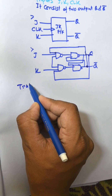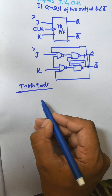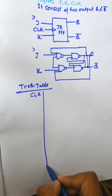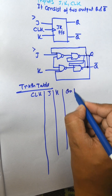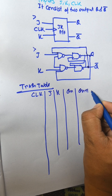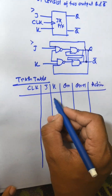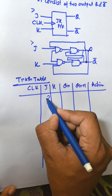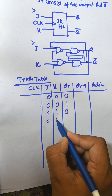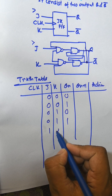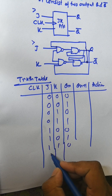Now the truth table. The truth table consists of CLK, J, K inputs, and Q(n+1) as the next state, and the action. The input combinations are: 0 0 0, 0 0 1, 0 1 0, 0 1 1, 1 0, and finally 1 1 1.